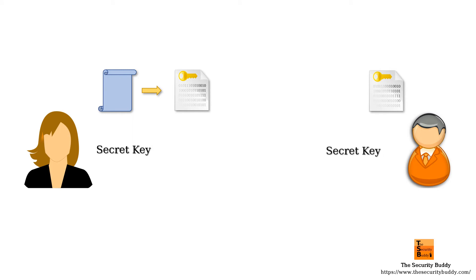If Alice wants to send some encrypted message to Bob, they need to use a pre-shared key or share the secret key over a secure channel. But that may not always be feasible, so we often use public key encryption or asymmetric encryption.